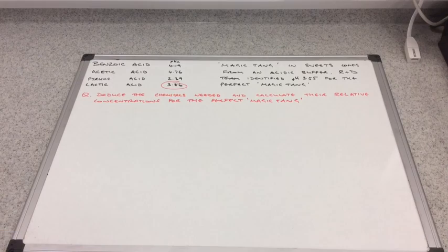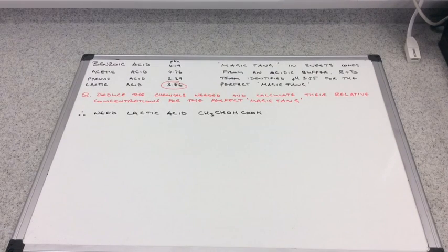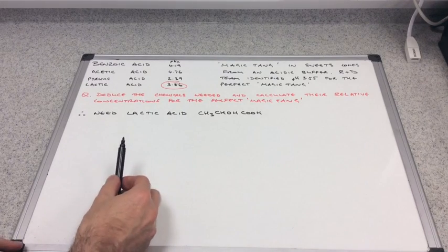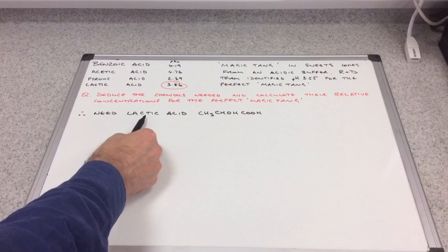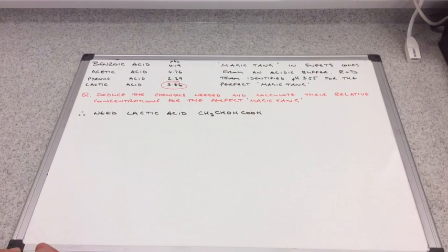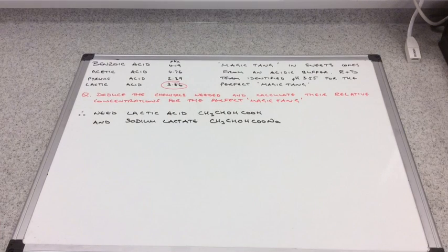The lactic acid is within that plus or minus one range. We want a 3.55 pH and lactic acid's the closest to that at 3.86, so that's the first mark. There's the formula of lactic acid that was given in the question. What would the other chemical be? Remember to make a buffer we need a weak acid and a salt of a weak acid, so the one I'm going to go for is sodium lactate.